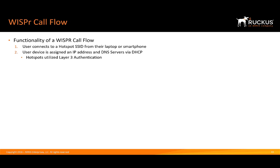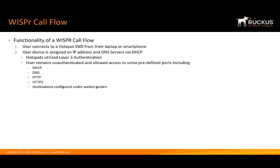One key point is that hotspots utilize layer 3 authentication. That means you have to have an IP address to communicate with any of the servers and services running within this environment. The user is going to remain unauthenticated, but will be allowed access to some predefined ports — these are crucial because they're what you need to actually authenticate within the venue before communicating out to the internet. These ports are only allowed within the venue, not outside.